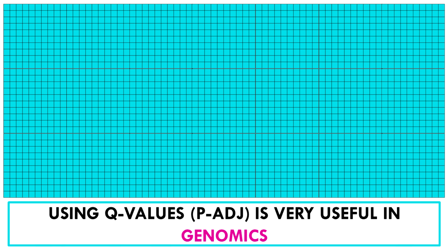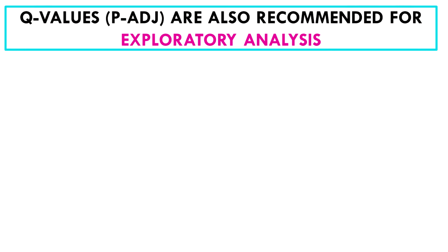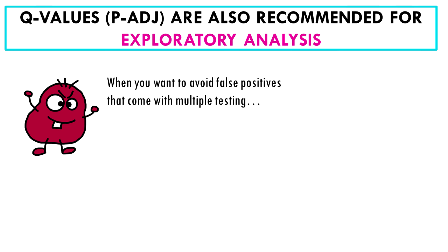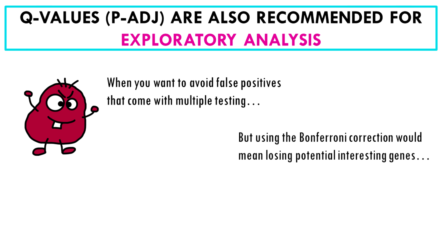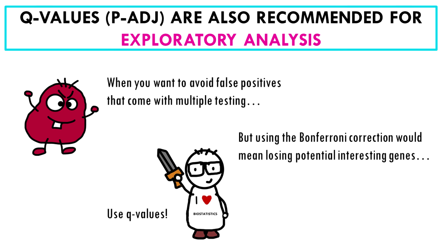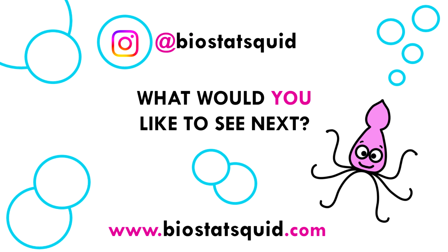For example, if you're doing a pilot study or exploratory analysis on genes correlated with Alzheimer's, you want to avoid losing potential interesting genes. But you also don't want a lot of false positives, so you can use q-values for this. And that is all for today — squid-tastic! I hope this video gave you a clear explanation of what multiple testing is and how to correct it. If you liked this video, please let me know, and also let me know what other topics you would like to cover next. Have a great day, and see you in the next one.